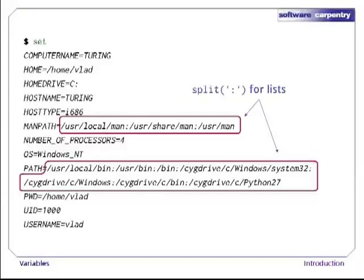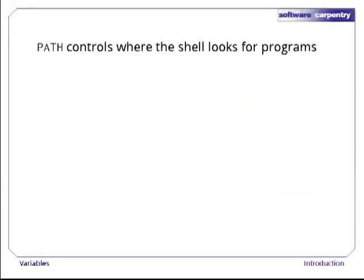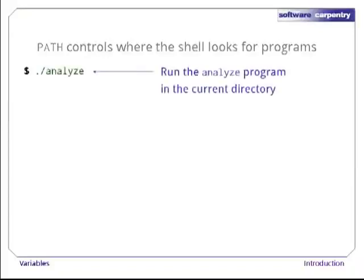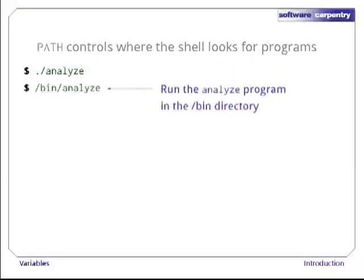Some variables store lists of values — here, the convention is to use a colon as a separator. If a program wants the individual elements of such a list, it's the program's responsibility to split the variable's string value into pieces. Let's have a closer look at one of the most important list-valued variables, path. Its value defines the shell's search path, i.e., the directories that the shell looks in for runnable programs.